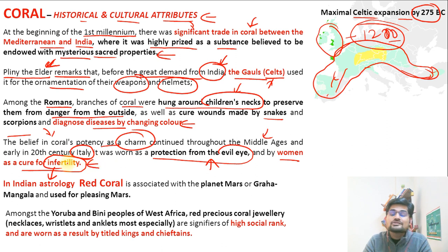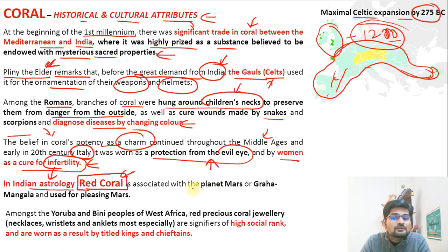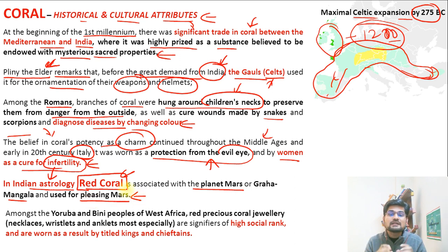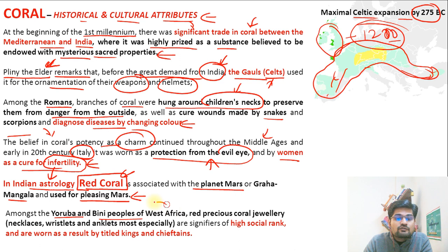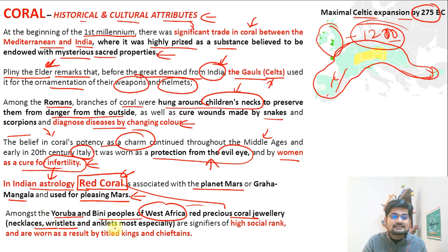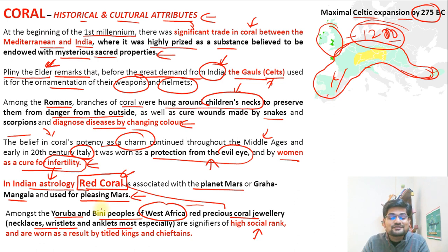Coral is also associated with women as a cure for infertility in many countries. In Indian astrology, red coral — 'lal moonga' — is associated with the planet Mars, or 'Mangal Grah,' and is used for pleasing and modulating the planet's influence. Among the Yoruba and Bini people of West Africa, red precious coral jewelry — necklaces, wristlets, and anklets — signifies high social rank.